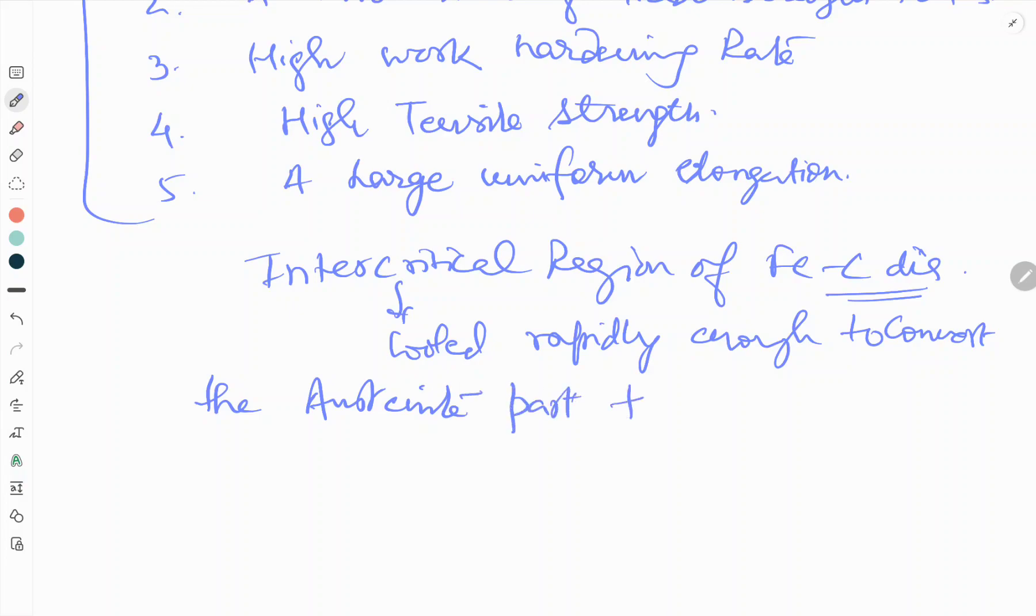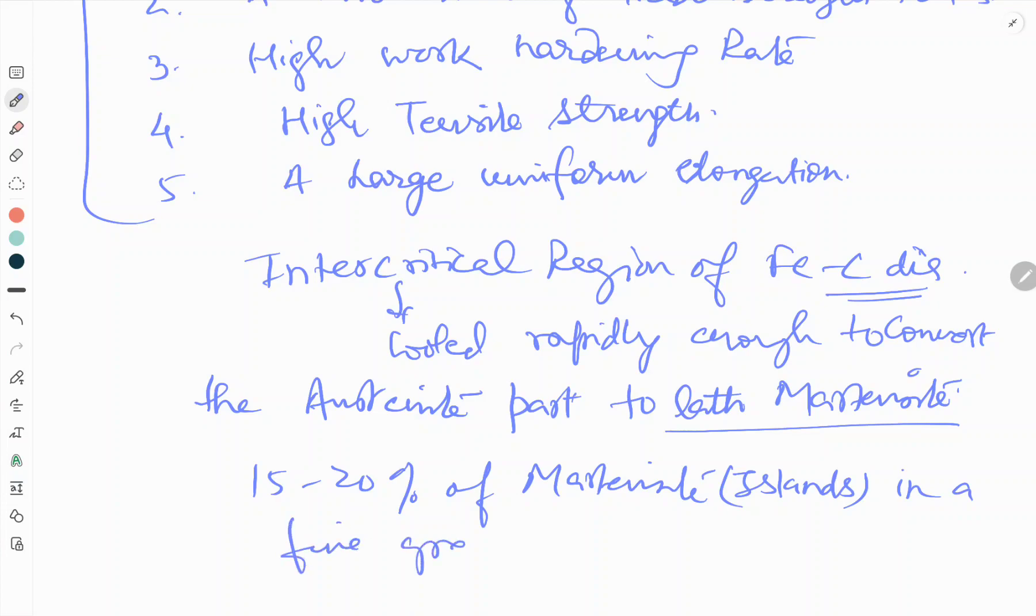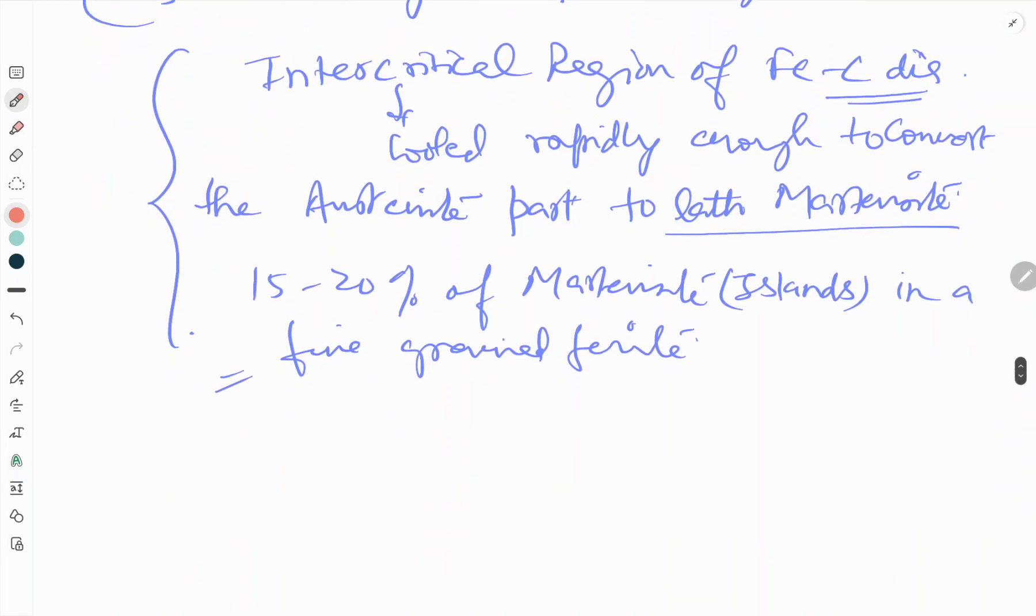The final microstructure of this steel consists of 15 to 20% of martensite islands in a fine-grained ferrite matrix.